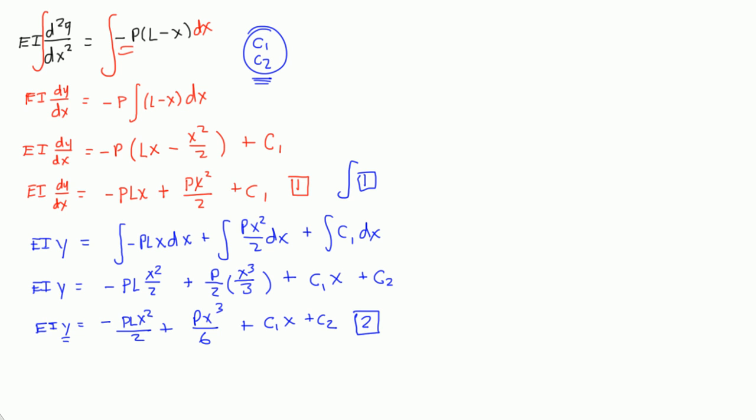Alright, let's look at equation 2 first. At x equals 0, the deflection is equal to 0, right? That's one of our boundary conditions. So, let's actually take this and plug it into equation 2 to figure out what the constants are.